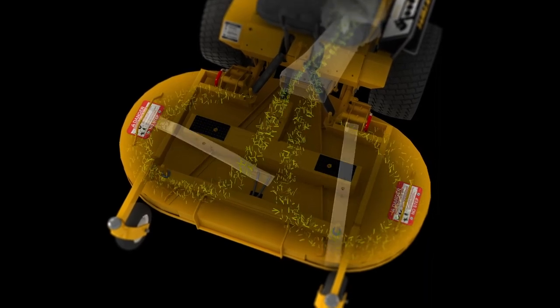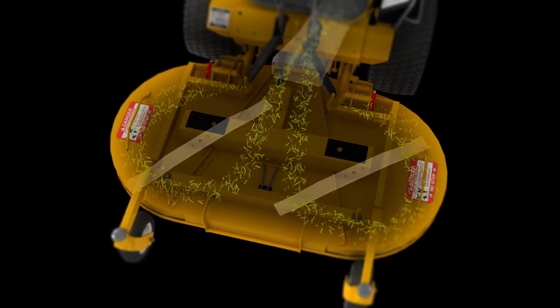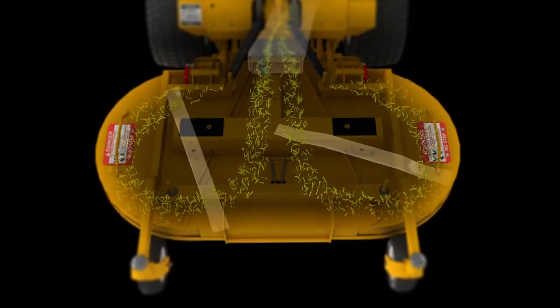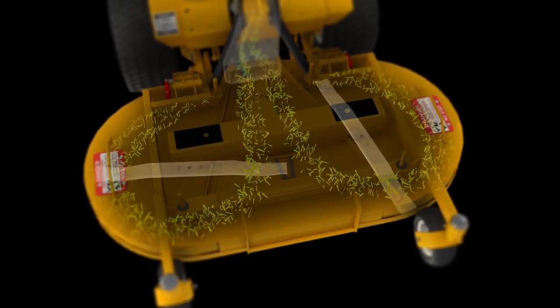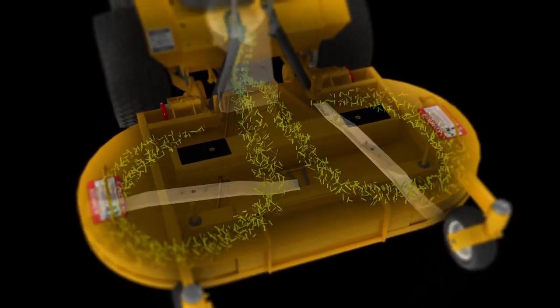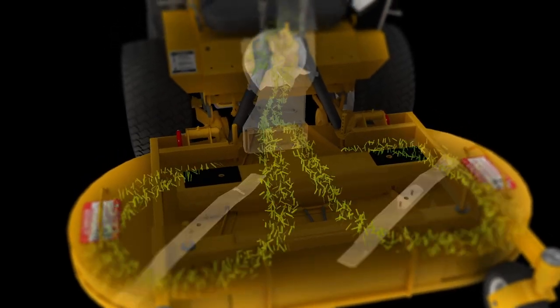Two rotation patterns are available: standard and reverse rotation. Standard rotation blades come together at the front of the deck, moving material directly into the discharge chute. Standard rotation decks are ideal for users who need to collect thick heavy clippings, including leaves and other yard debris.